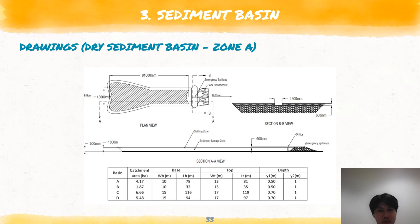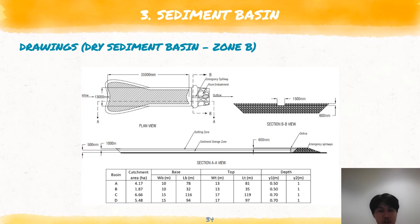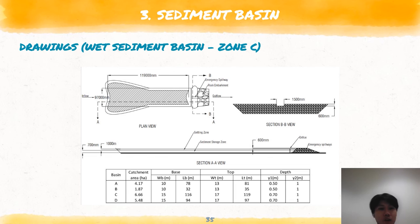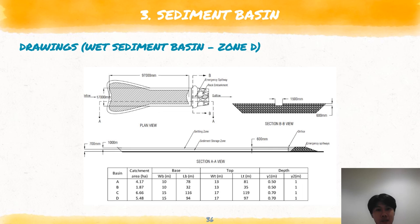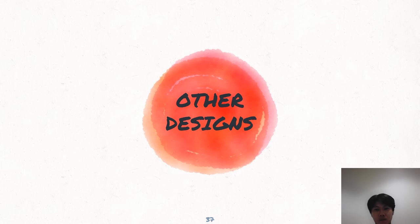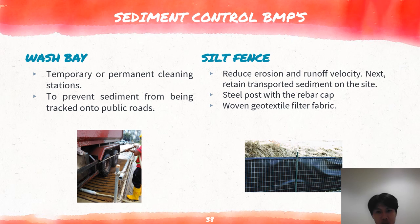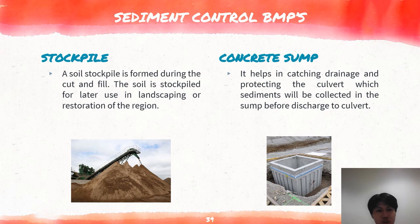This is the detailed drawing for the dry sediment basin for zone A. This is the dry sediment basin for zone B. This is the wet sediment basin for zone C. This is the wet sediment basin for zone D. Now I will explain the other designs — sediment control BMPs. The first is the wash bay, which is a temporary or permanent cleaning station that helps prevent sediments from being tracked onto public roads. The second is the silt fence, which helps reduce erosion and runoff velocity and retains transported sediments from the site. In this project, steel poles with rebar caps are used with woven geotextile filter fabric. The third is the soil stockpile, which is formed during cut earthwork; soil is stockpiled for later use in landscaping or restoration. The last is the concrete sump, which helps in catching drainage and protecting the culvert, where sediments are controlled in the sump before being discharged to the culvert.